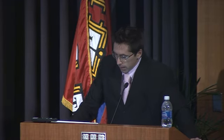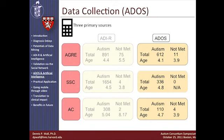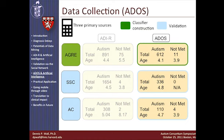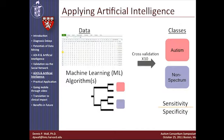Moving into ADOS — we've applied identical methodologies to the analysis of ADOS. ADOS Module 1 is most commonly deployed for younger children, which is the one we wanted to evaluate since we're looking for early detection tools. This examination contains 29 items associated with 10 activities and is conducted within a clinical environment. Again, we went through data collection for training, testing, and classifier construction using AGRE, and validated with Simon Simplex and Autism Consortium.